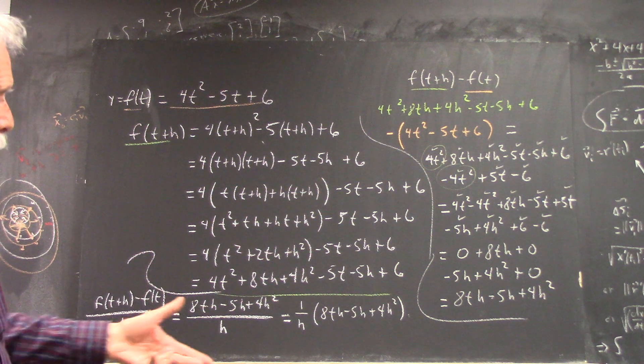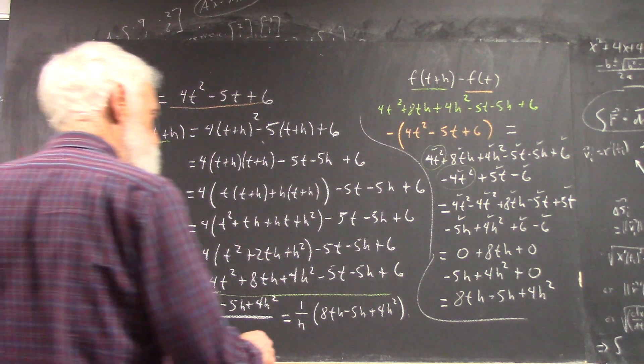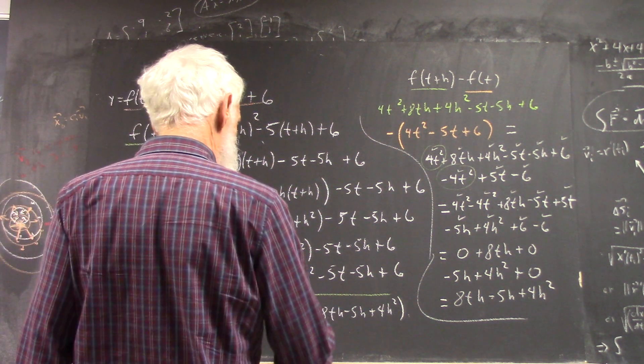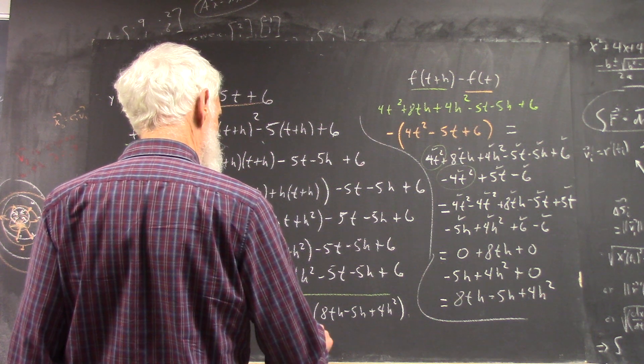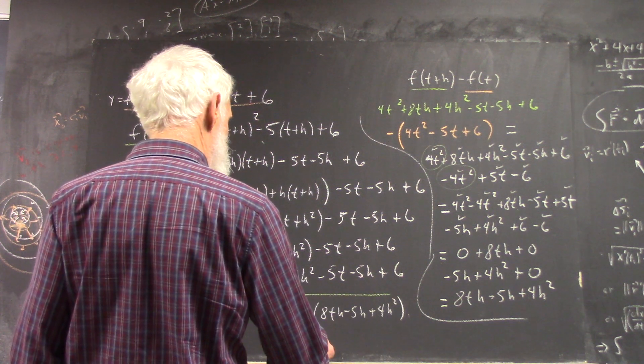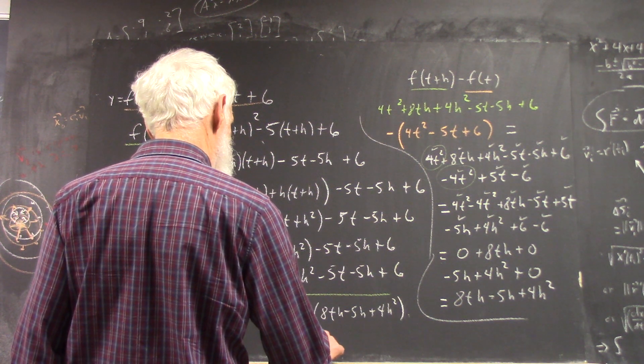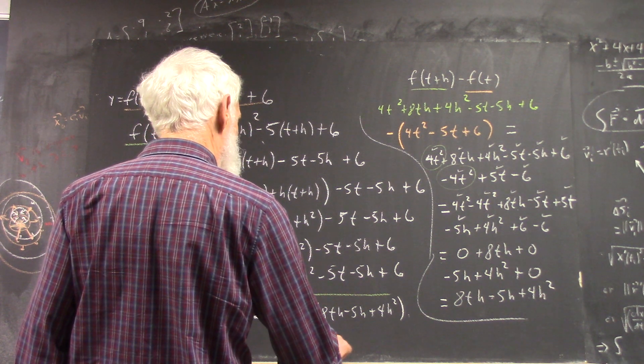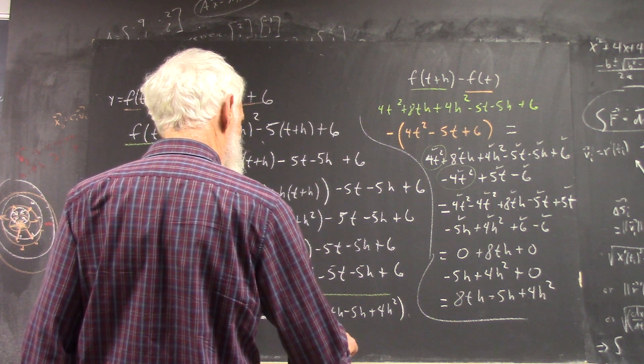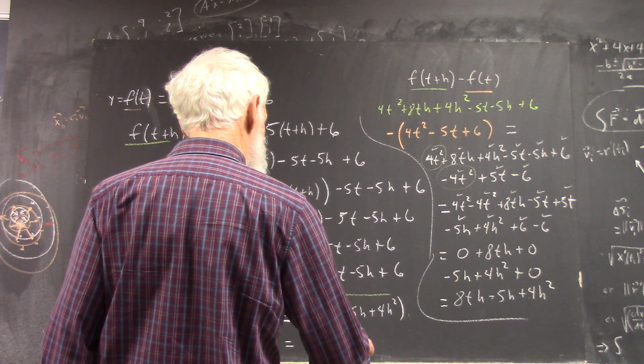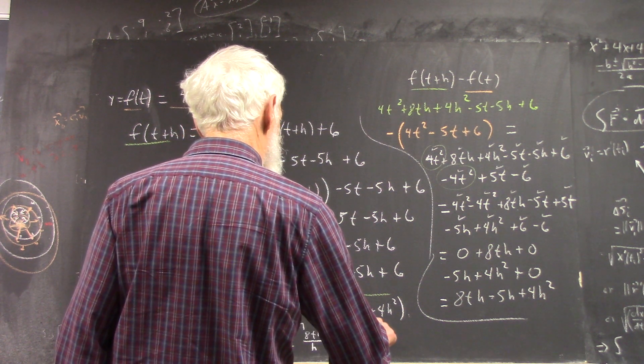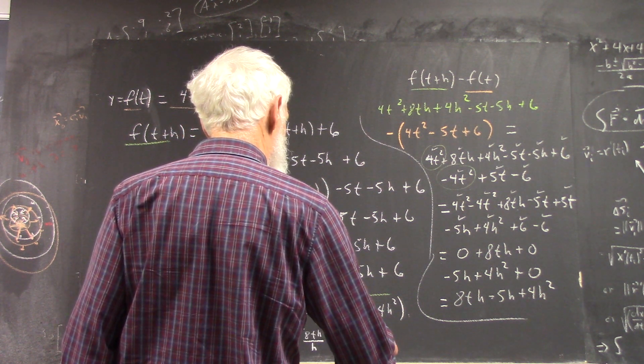Because there were mistakes. Now, by the distributive law, that's 8th over h minus 5h over h plus 4h squared over h.